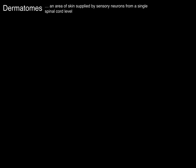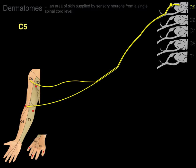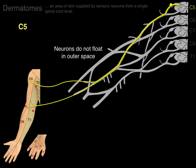A dermatome is an area of skin supplied by sensory neurons from a single spinal cord level. Here we have the C5 neurological level, and there we have sensory neurons coming from the C5 dermatome to the C5 spinal cord level. But neurons do not float in outer space — we now lay the brachial plexus on top of that. We can recognize that the axillary nerve and radial nerve are the roads that transmit those sensory neurons from the C5 dermatome to the C5 spinal cord level.